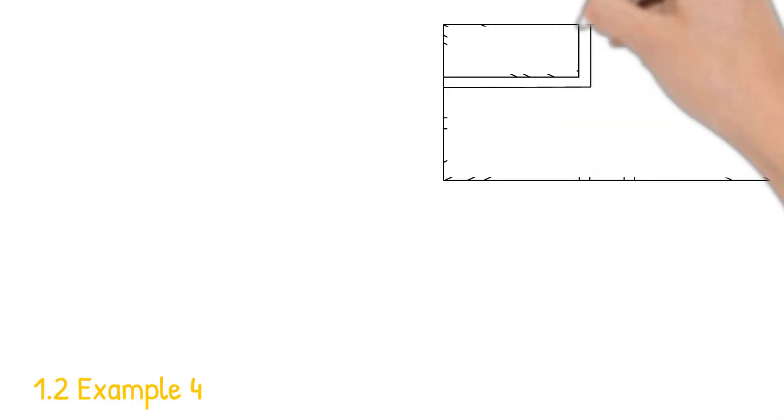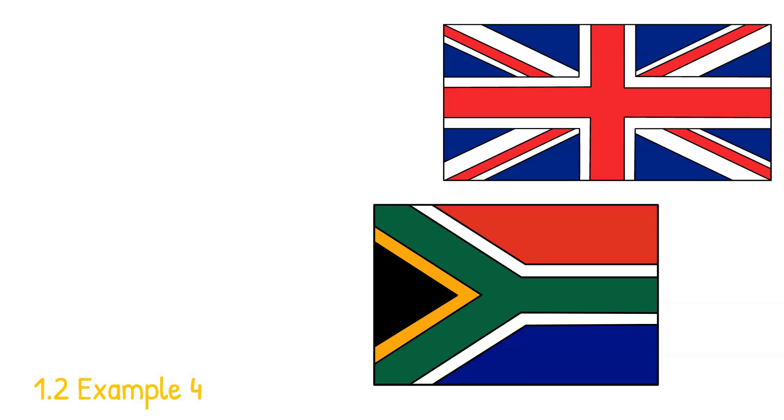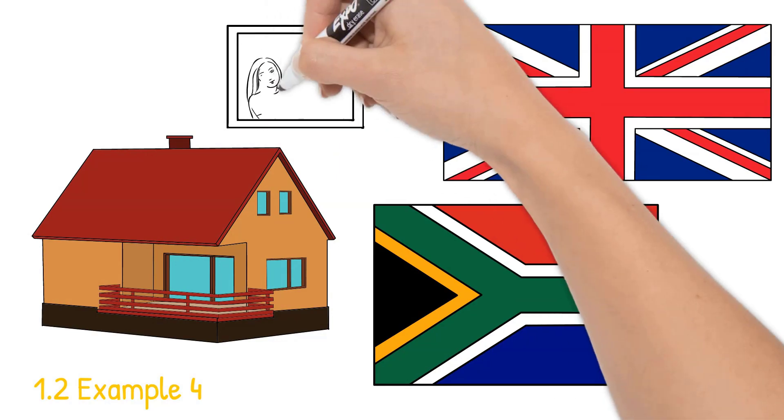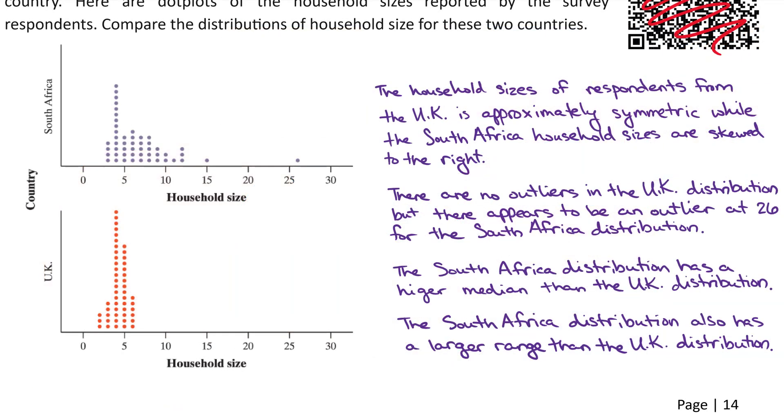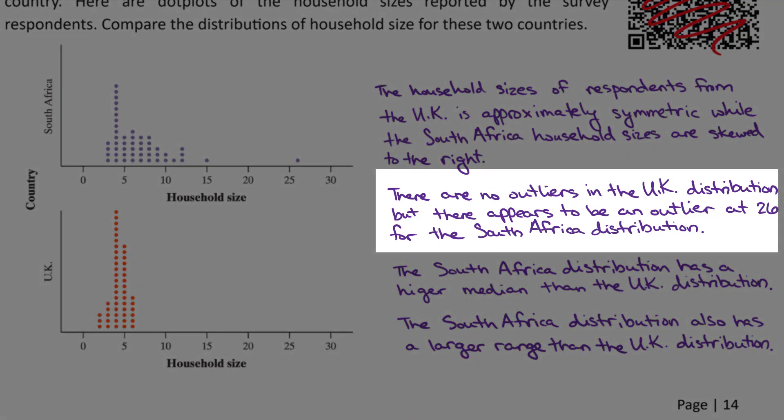1.2 example four. How did the number of people living in a household in the United Kingdom and South Africa compare? To help answer this question, we use the Census at Schools random data selector to choose 50 students from each country. Here are the dot plots of household sizes reported by the survey respondents. Compare the two distributions. Example four is asking us to compare the distributions of household sizes for these two countries. And the key word here is to compare. They're not asking you to describe the two dot plots separately, but we need to compare these. And that's going to be part of the rubric on your AP exam. And you would definitely lose points if you just described the South African distribution and the United Kingdom distribution separately without linking and comparing them. So first let's compare the shapes. So we'll say the household sizes of respondents from the UK is approximately symmetric, while the South Africa household sizes are skewed to the right. Then we can comment on the outliers. There are no outliers in the UK distribution, but there appears to be an outlier at 26 for the South African distribution.